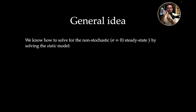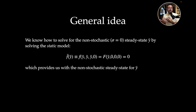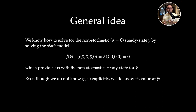We have created a connection between the unknown policy function g and the model equations, but we still have no idea how g looks. However, we do know one point of that unknown function — the steady state. We know how to solve for the non-stochastic steady state by setting sigma = 0, giving the static model. We can solve those static model equations analytically or using numerical optimization. If we are in steady state and nothing happens, the optimal decision is to stay in the steady state.